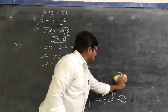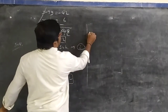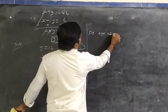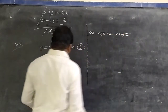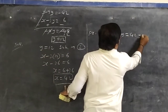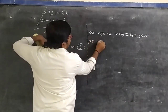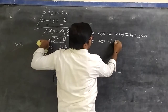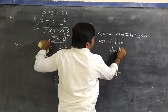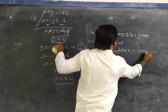Therefore, the present age of Mary is 42 years and the present age of her daughter is 21 years. Thank you.